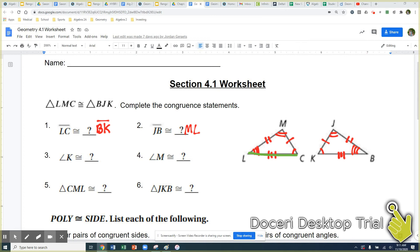Look at LC. L is on the outside, C is on the outside. So it's the first and last of this statement. BK, look at that. B is the first, K is the last. So the two letters LC are going to match up to the two letters on the other part of your congruent statement.